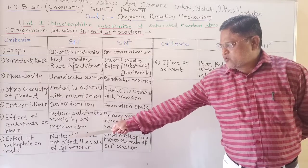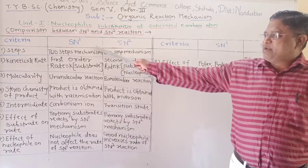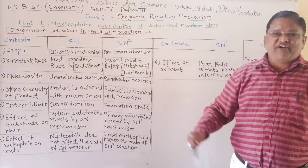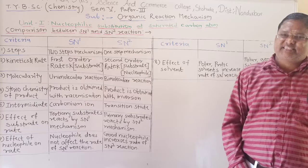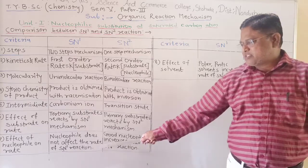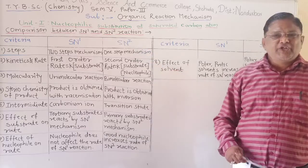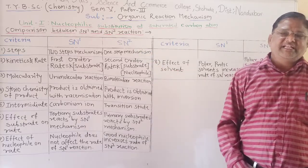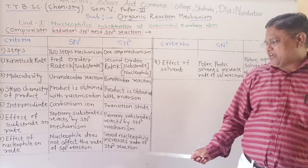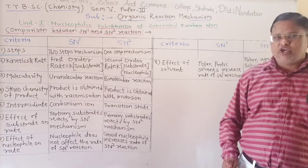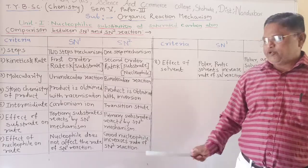Now, the seventh criteria is the effect of nucleophile on the rate. In SN1 mechanism, the nucleophile does not take part in the slow step, so the rate of SN1 reaction does not depend upon the nucleophile. In SN2 reaction, the nucleophile takes part in the slow step, and therefore the rate of SN2 reaction depends upon the nature of the nucleophile. A good nucleophile increases the rate of SN2 reaction.